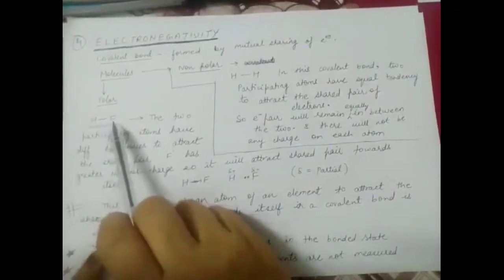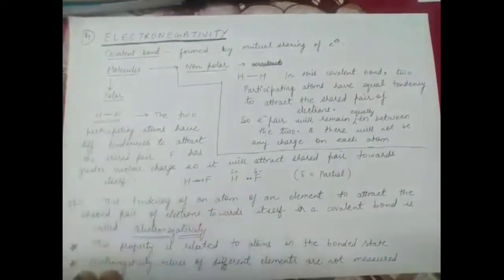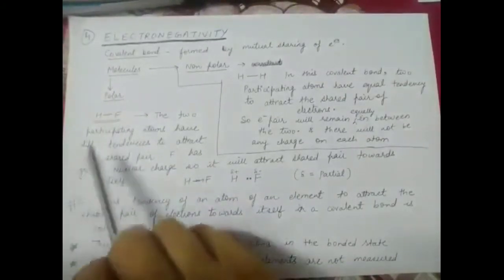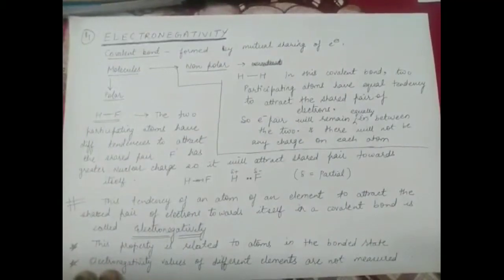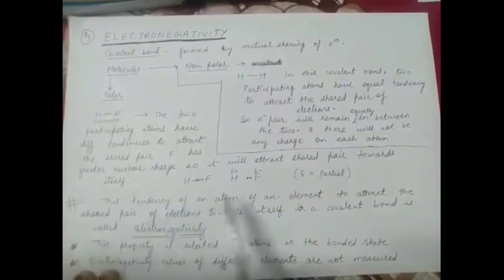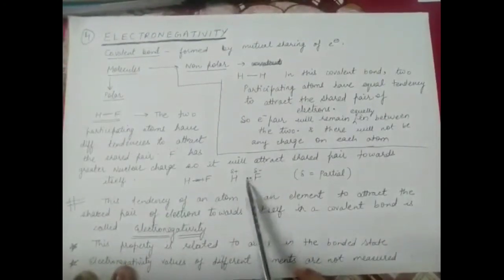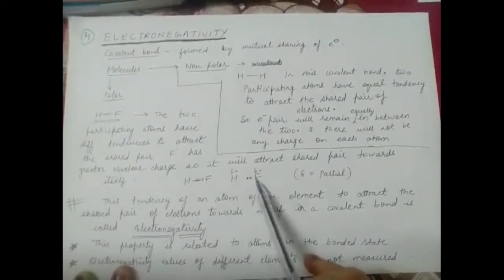Now consider HF as an example. These two atoms are dissimilar — the nuclear charge of hydrogen and fluorine are different. Fluorine has more nuclear charge because it has more protons. So the two atoms have different tendencies to attract the shared pair. Fluorine, having greater nuclear charge, attracts the shared pair of electrons towards itself. The electron pair remains between the two atoms — the bond is still covalent — but the shared pair is shifted more towards fluorine.